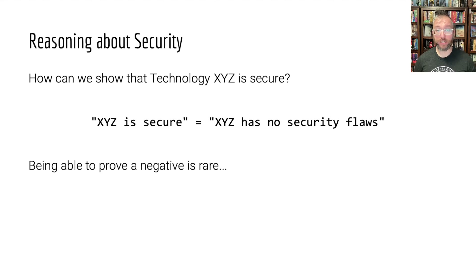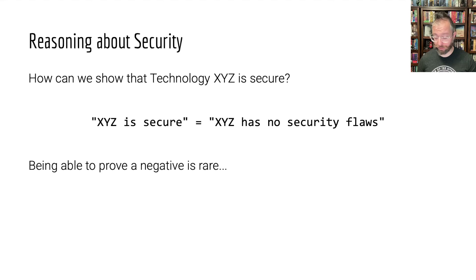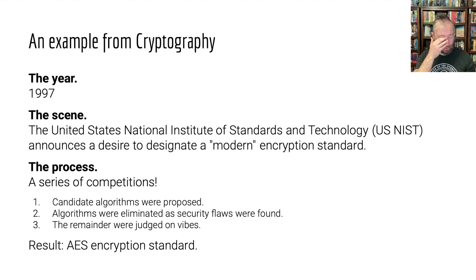It's not impossible. There are examples in cybersecurity of systems that were proven to be secure, but this is far from the typical case. Generally speaking, you get a very good idea that something is secure — a good hunch, or at least a fuzzy feeling — by trying to break it and failing.